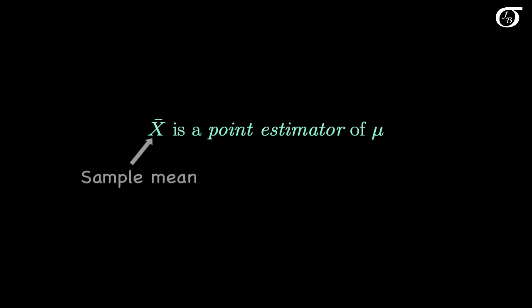The sample mean X-bar is a point estimator of the population mean mu. We call X-bar a point estimator because once we get our sample, X-bar is going to take on a single value such as, for example, 37.3, and that single value is a point estimate of mu.